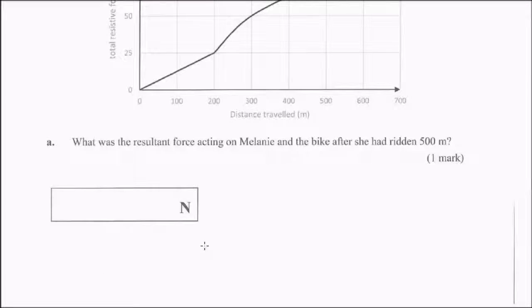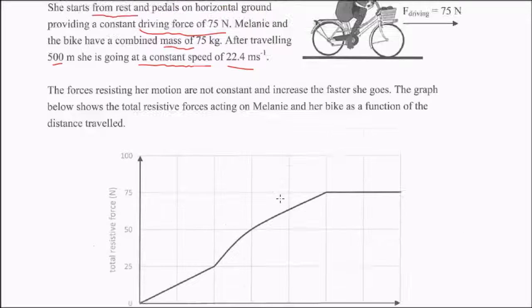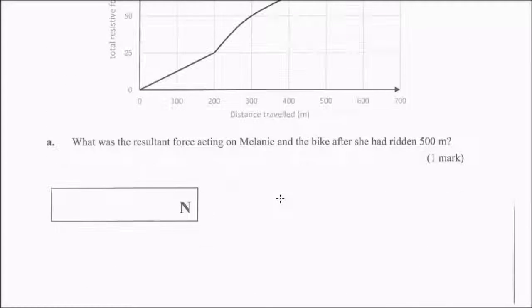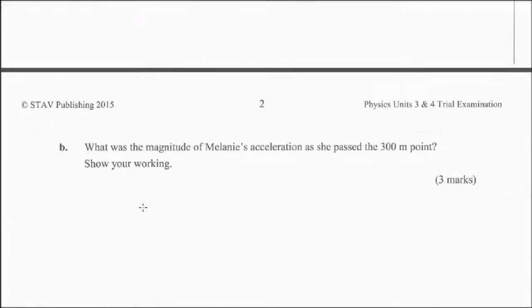Going down to our first question. What is the resultant force acting on Melanie and the bike after she had ridden 500 metres? So this is a trick question, basically. The whole point of this is that after she's travelled 500 metres, she's going at a constant speed, which means that the net force, so resultant is basically just another word for net force, is zero newtons.